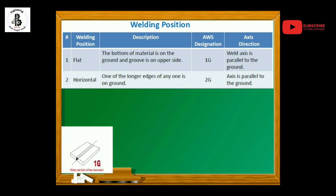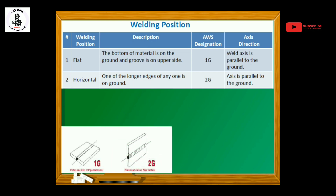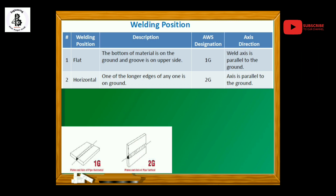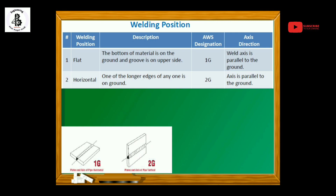The second welding position is the horizontal position. In the 2G position, one of the longer edges of the workpiece is on the ground as per the figure geometry. The weld axis is parallel to the ground, and per AWS designations this is known as the 2G welding position.